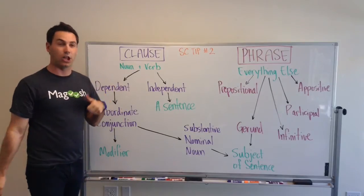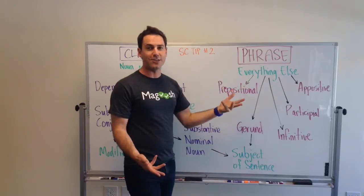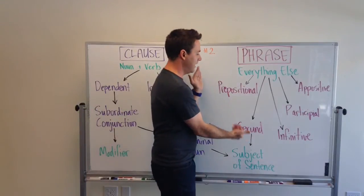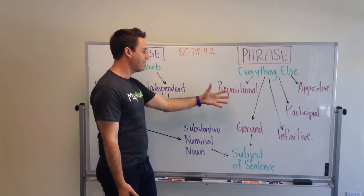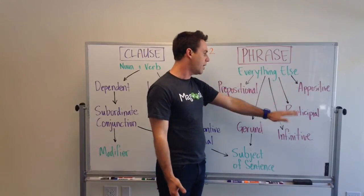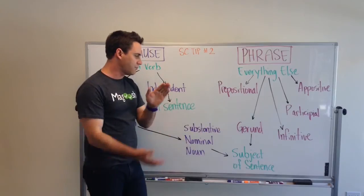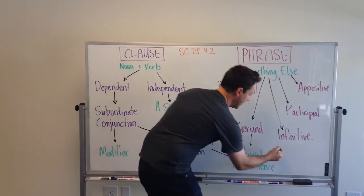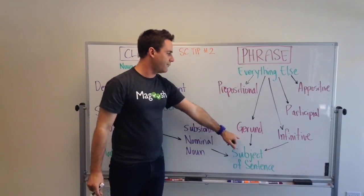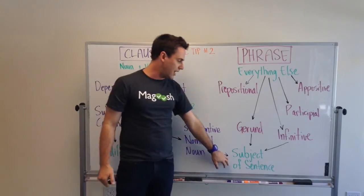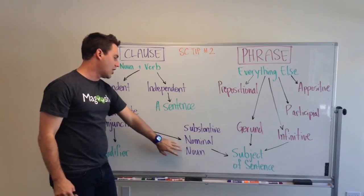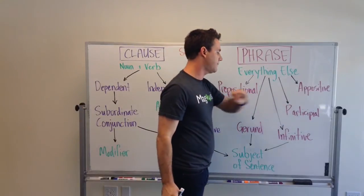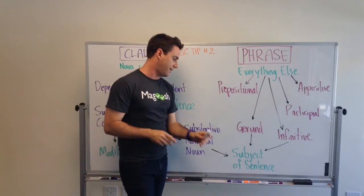So that covers clauses. Moving on to phrases — phrases are everything else. Anything that's not a noun plus a verb is going to be a phrase. There are all kinds of phrases: prepositional phrases, appositive phrases, participial phrases, infinitive phrases, and gerund phrases. The gerund phrase and the infinitive phrase can also function as the subject of a sentence, just like our noun clause. Otherwise, these phrases are going to be modifying and describing different parts of the sentence.